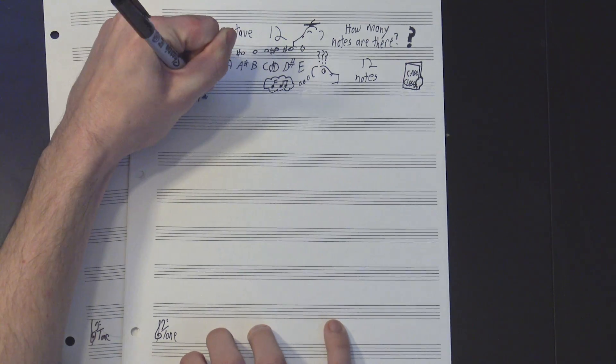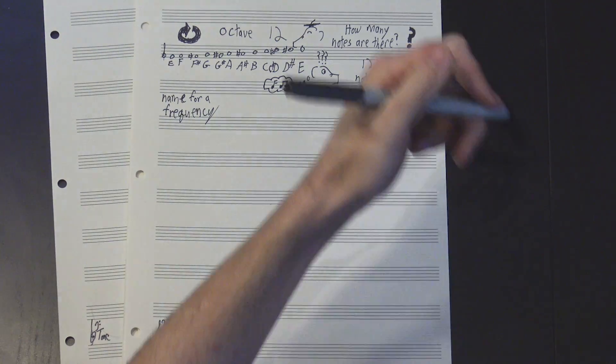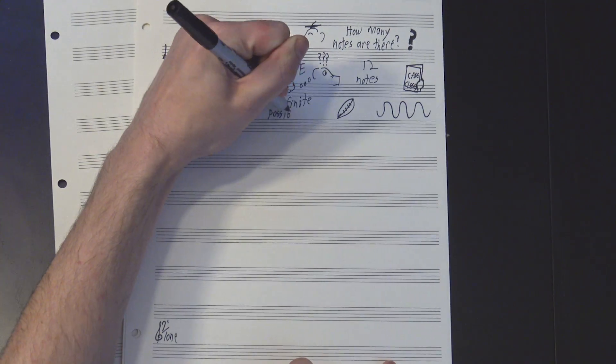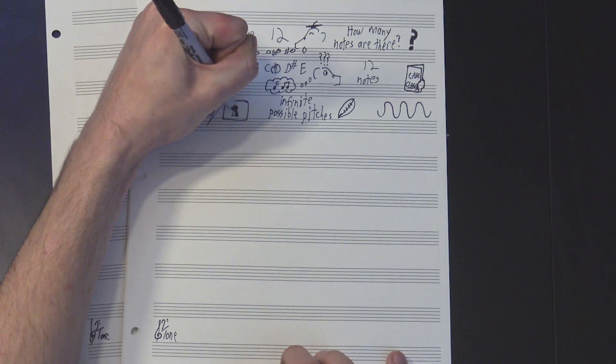I mean, if you think about it, a note is just a name we give to a specific frequency, and it's not like there's only 12 frequencies or anything. Even within a single octave, there's an infinite number of possible pitches, so why limit ourselves to just these 12?